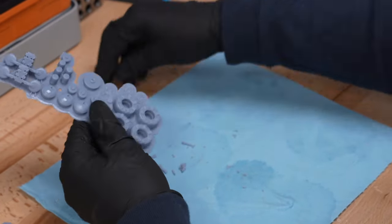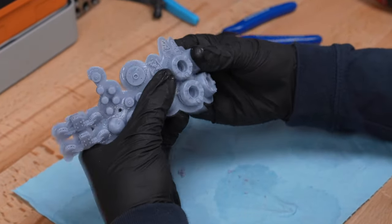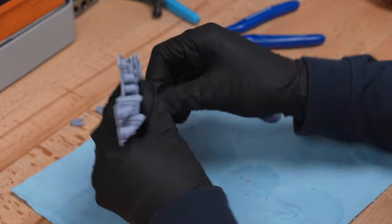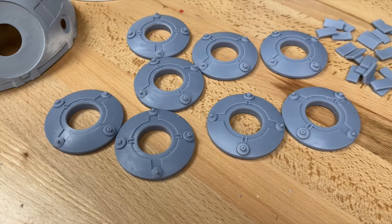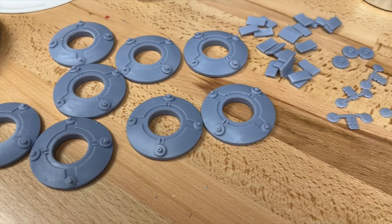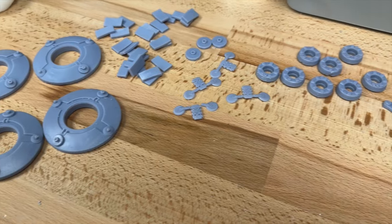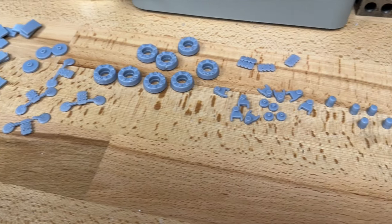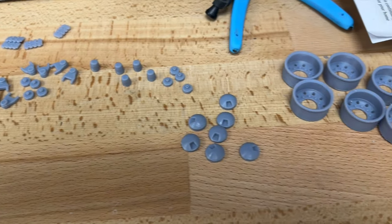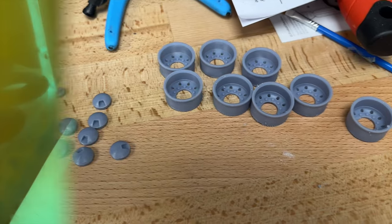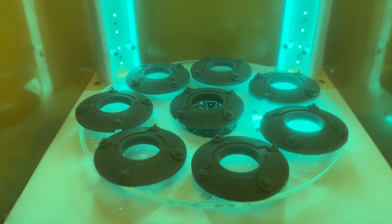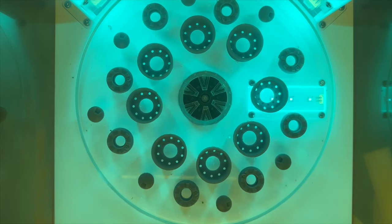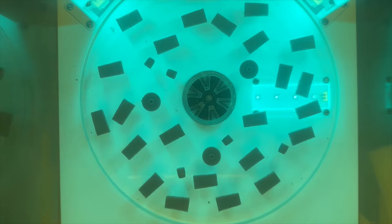It would be cool to maybe see adaptive layer height settings options come to the resin printing world. You could keep a more standard 0.05 millimeter layer height for the majority of the model, but anywhere where those layers might become more visible, start to lower the layer height for the most optimal results. Once I had all of the detail pieces printed, cleaned, and cured, it was on to starting to assemble the ball.